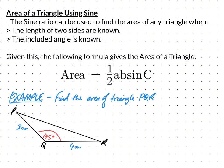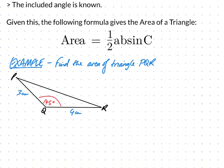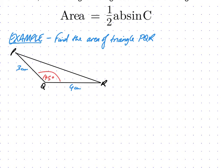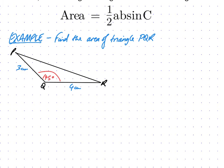For example, find the area of triangle PQR. Let's check that this situation can use this formula. You have the angle here, it's between two known sides, so the angle is the included angle. We have two known sides, we can use this formula.